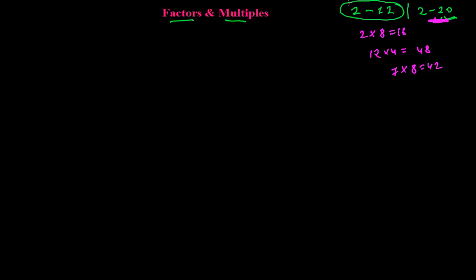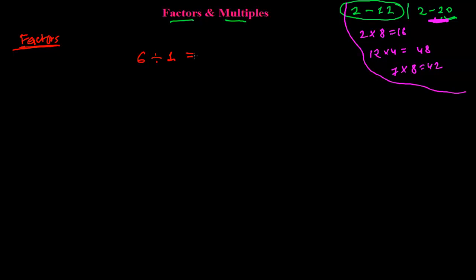I hope you are already good with that. So let's talk about factors today. What is a factor — when can I say a number is a factor of another number? Suppose I have the number 6. What are the other numbers that can exactly divide 6 without any remainder? If I divide 6 by 1, I get 6, and the remainder will be 0.